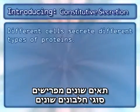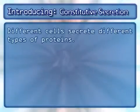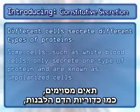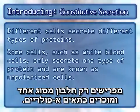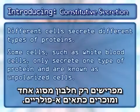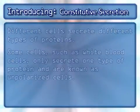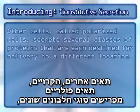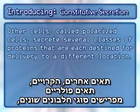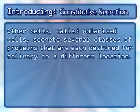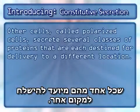Different cells secrete different types of proteins. Some cells, such as white blood cells, only secrete one type of protein and are known as unpolarized cells. Other cells, called polarized cells, secrete several classes of proteins that are each destined for delivery to a different location.